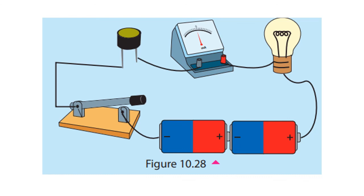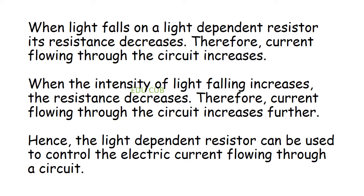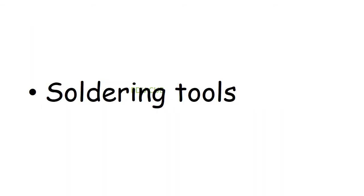When light falls on the light-dependent resistor, resistance decreases and therefore the current flowing through the circuit increases. When the intensity of light falling increases, the resistance decreases further and therefore the current flowing through the circuit increases further. The light-dependent resistor can be used to control the electric current flowing through a circuit.